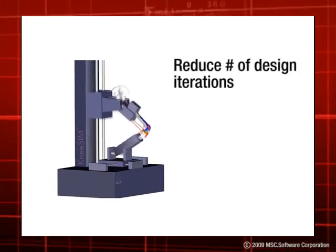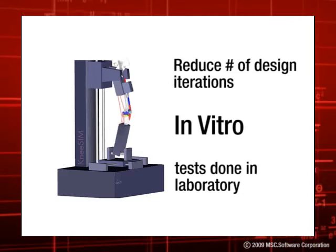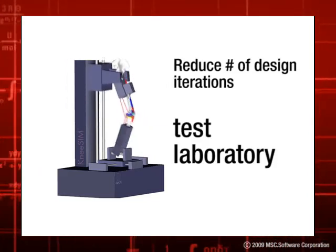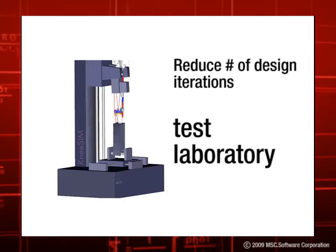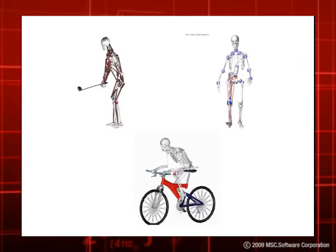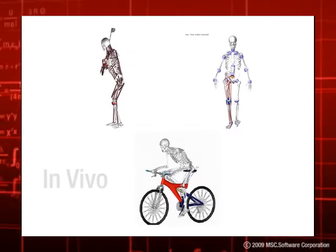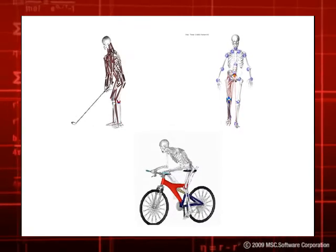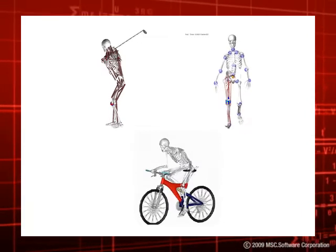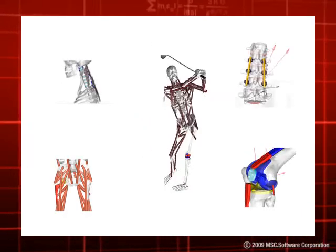New virtual prototyping methods and tools have been developed to reduce the number of design iterations by replicating in vitro tests done in the laboratory within a virtual simulation environment that produces the same results as the test laboratory. Once in vitro simulation is modeled and validated, in vivo simulations can be run within the virtual environment to replicate real life events such as climbing stairs, sitting, standing, jumping, and other physically demanding activities.